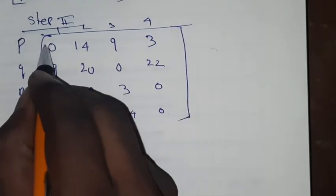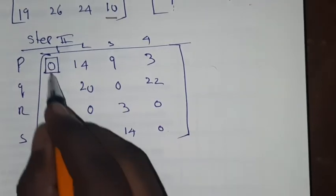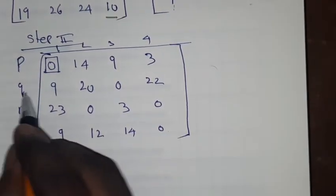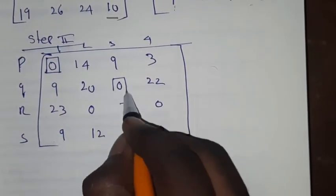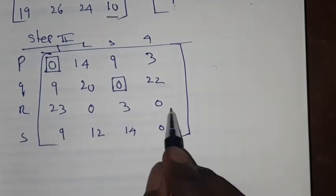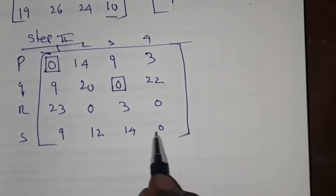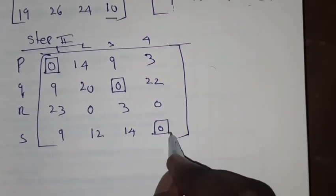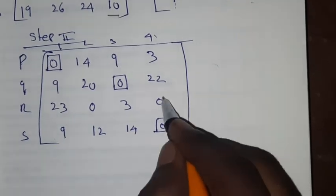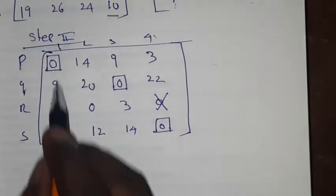Row-wise, looking for single zeros: P goes to task 1, Q goes to task 3. For R there are two zeros, and for S there are two zeros as well. If we assign S to the fourth job, we can strike out the other zeros. Now looking column-wise for single zeros.